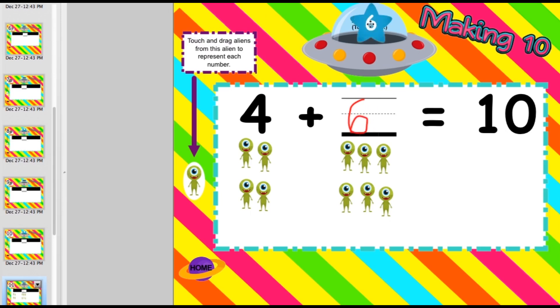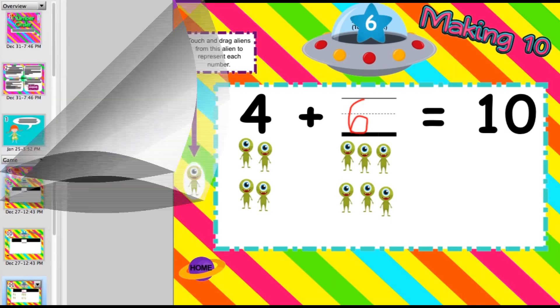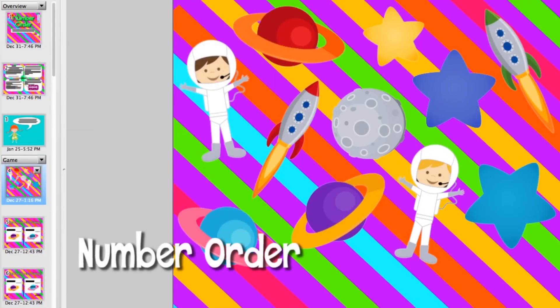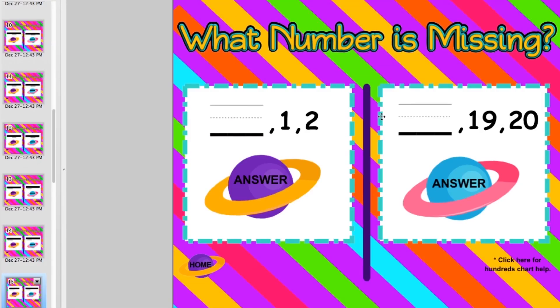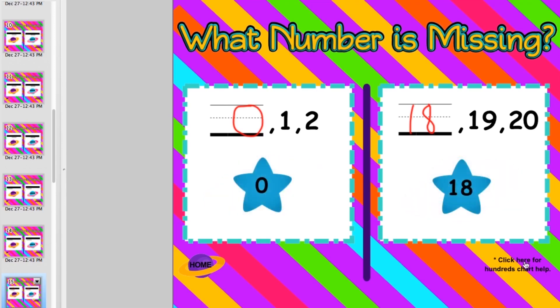In this number order planets game, students will decide which number comes before, after, or in the middle of a group of numbers. To check they're going to touch the planet below to see if they're correct. If they're having difficulty they can touch this link at the bottom and it will give them a hundreds chart to check which number comes before or after.